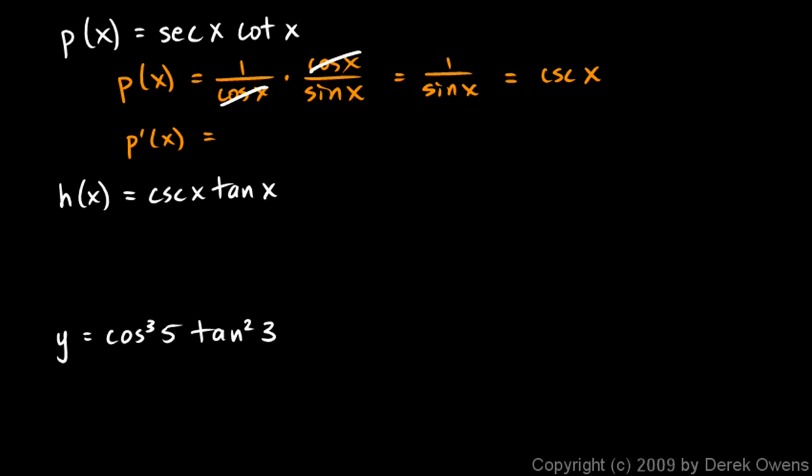The derivative of the cosecant function is negative cosecant x times the cotangent of x, and we're done. So that's a lot quicker and faster than the product rule, and a lot less error prone simply because there are fewer steps. If you can reduce the number of steps to your solution, that reduces the possibilities for error.